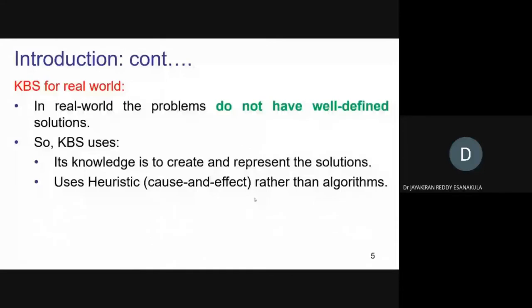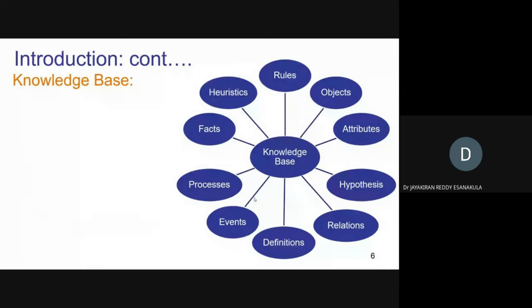The knowledge base is the center of the system. It starts from the topmost element — rules. The knowledge base will have rules about design, manufacturing, or modeling. Then objects, attributes, hypothesis, relations, definitions, events, facts, processes, and heuristics — all are kept in the knowledge base in a logical manner. Unlike a database where things are kept in rows and columns as fields that you simply retrieve.